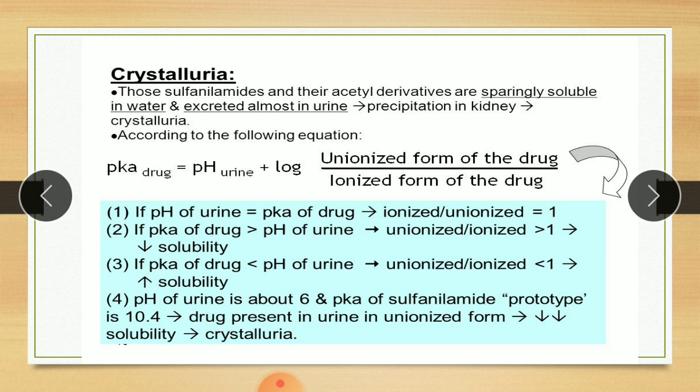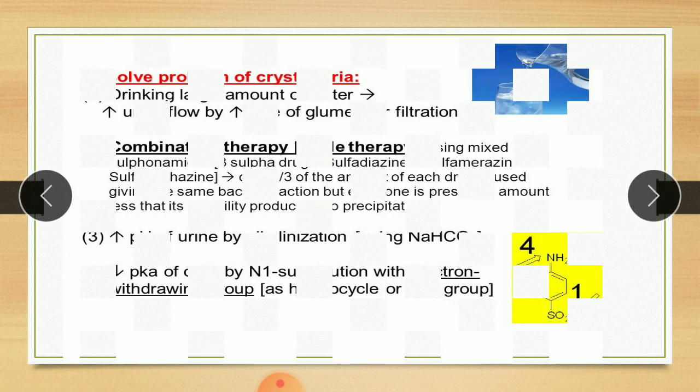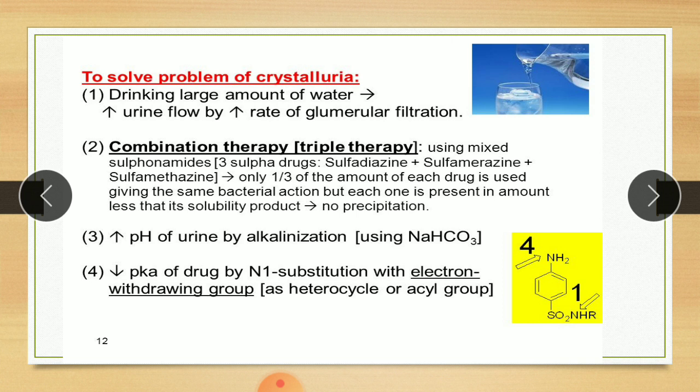Now to avoid this crystalluria, the following approaches are used. The first approach used is by increasing urine flow. The patient on sulfur therapy should drink large amounts of water. The idea was if glomerular filtration rate could be increased there is less chance of seed crystals to form in renal tubules.